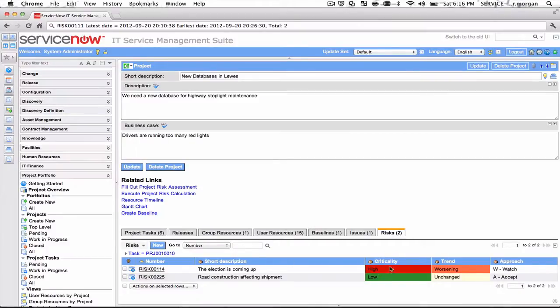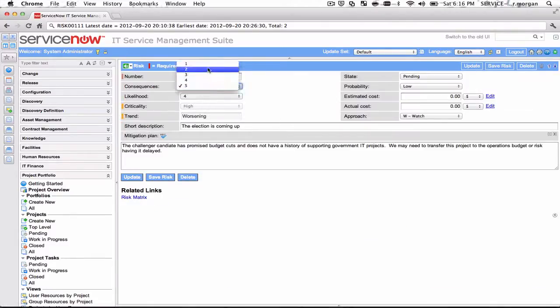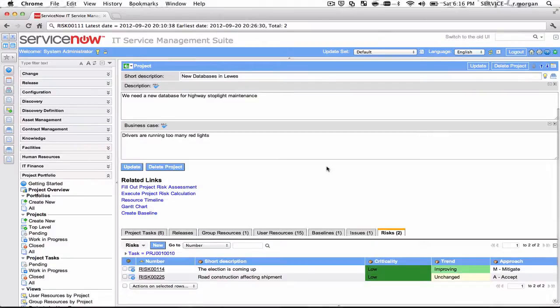We save that risk, when I come back here, sure enough it's trending worsening and we've taken a different approach to it. Let's go back in here, see if we can make it better. So that should work. You save that risk and now we see that this risk is low and it's improving. You do that with any of the risks here and really track it over time.